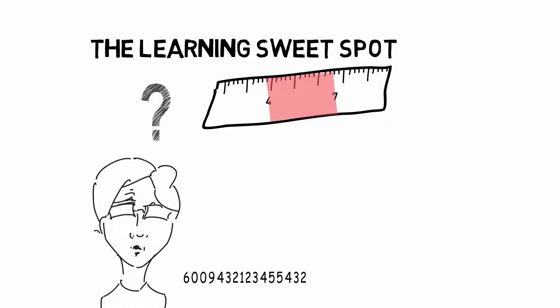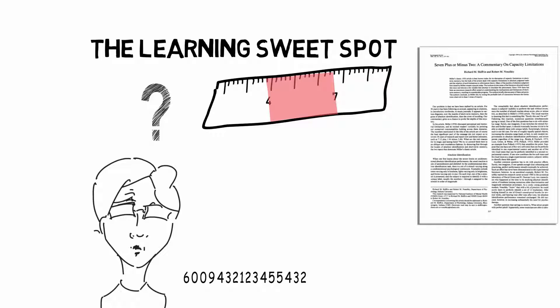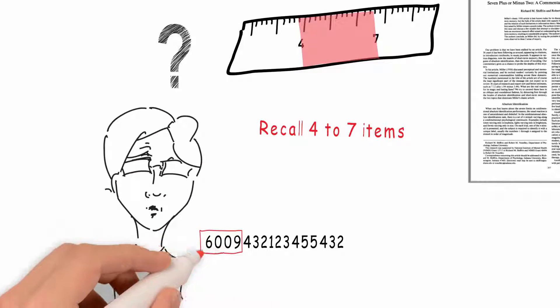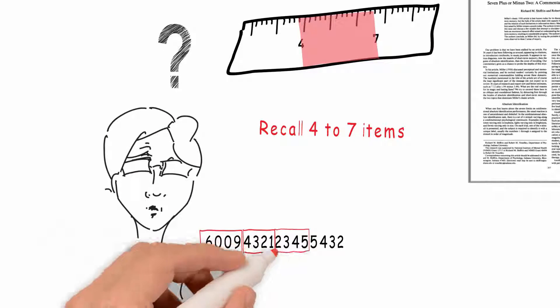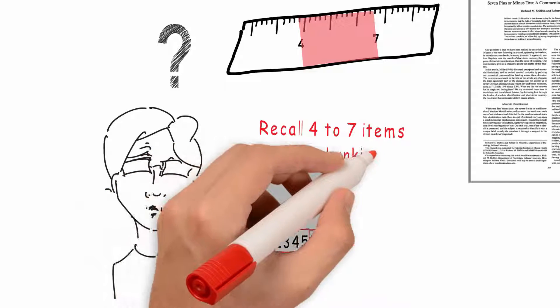For over 50 years, studies have suggested that our ability to accurately recall information is capped at about seven numbers or items. If we break up the information into little packets, or chunks, we are better capable of remembering greater amounts of information.